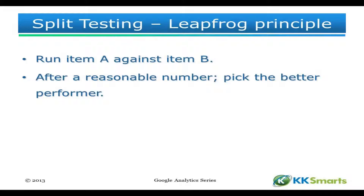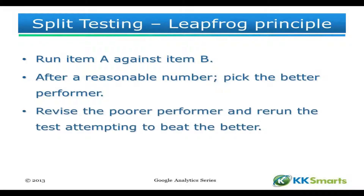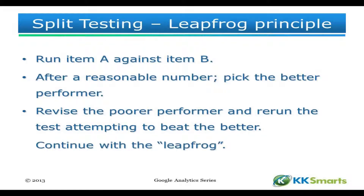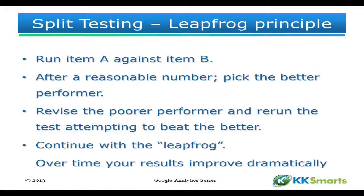You pick the better performer. Let's suppose that B was better than A. What you then do is you revise A — you change A and try to get A so that it will beat B. And if it does, great. If it doesn't, fine — you try again with something else. You continue this process of leapfrog, and over time your results improve dramatically. You get to a point where the eventual outcome is way, way ahead of where you started.